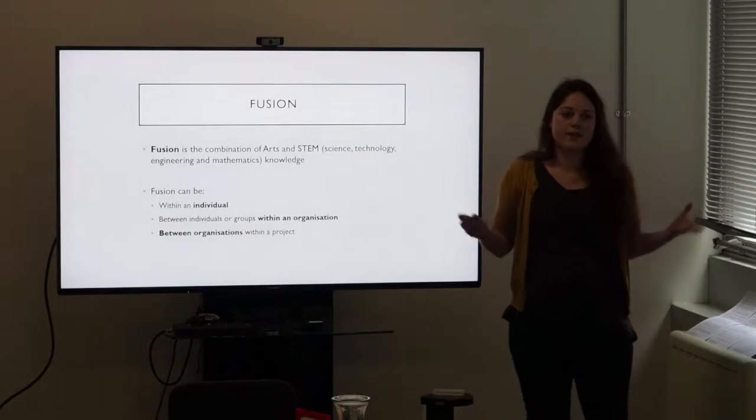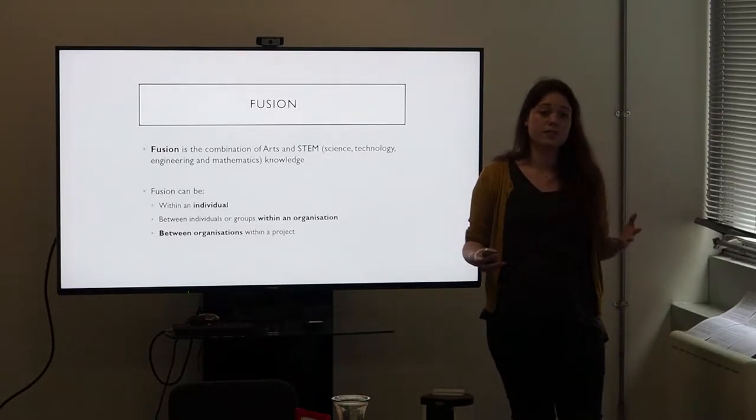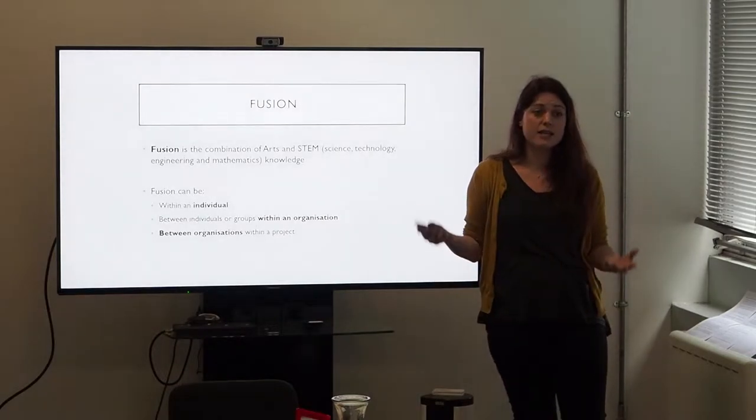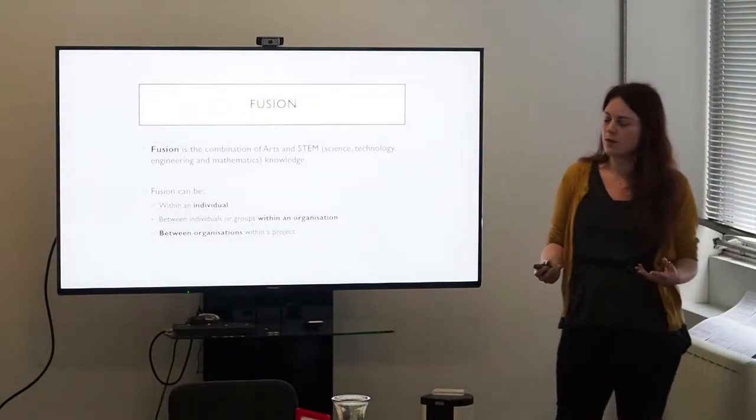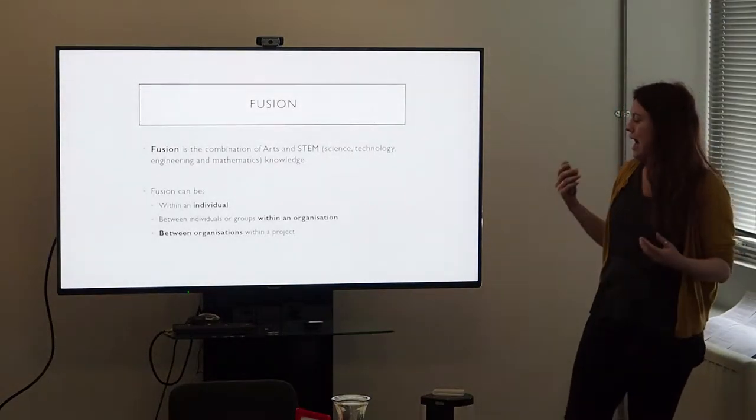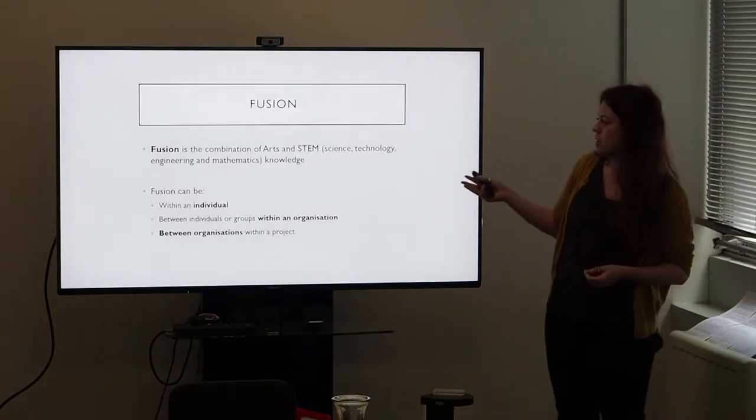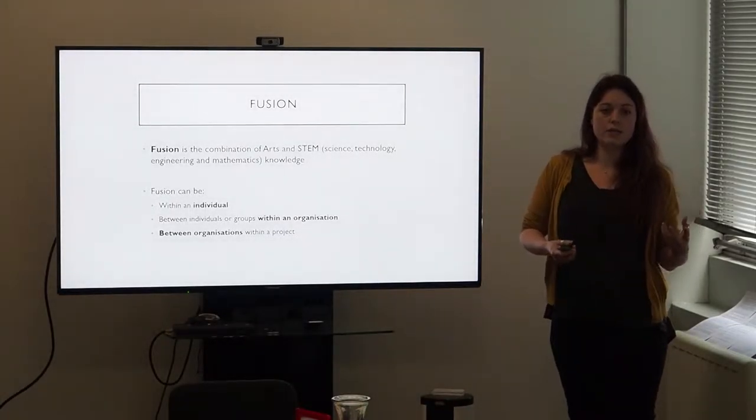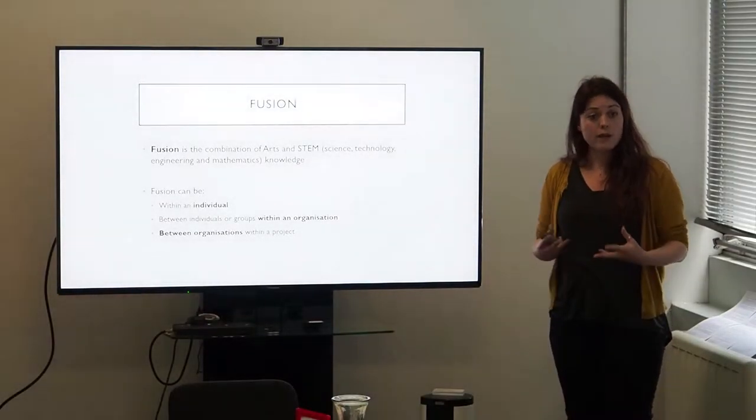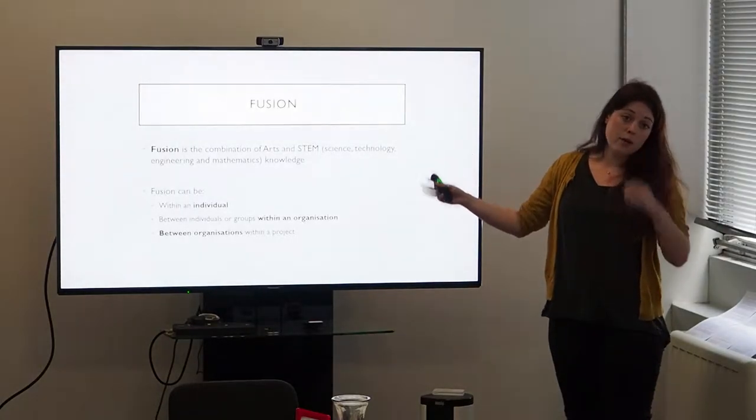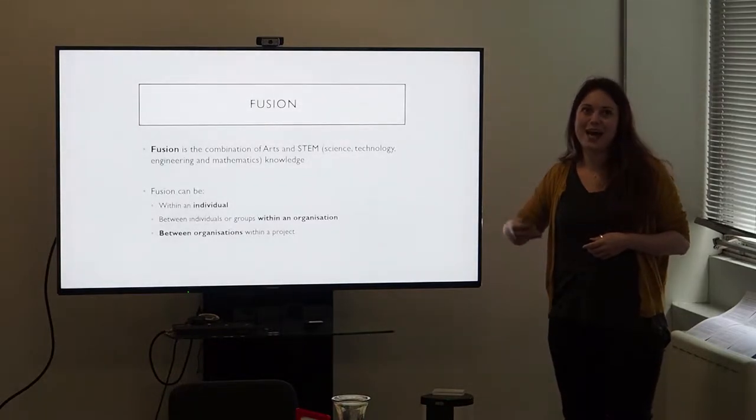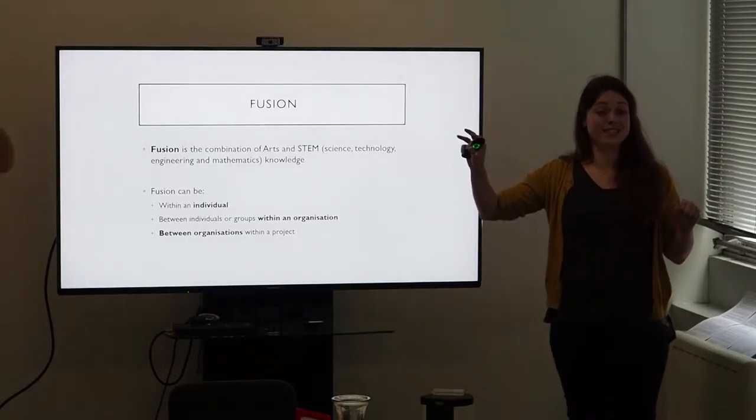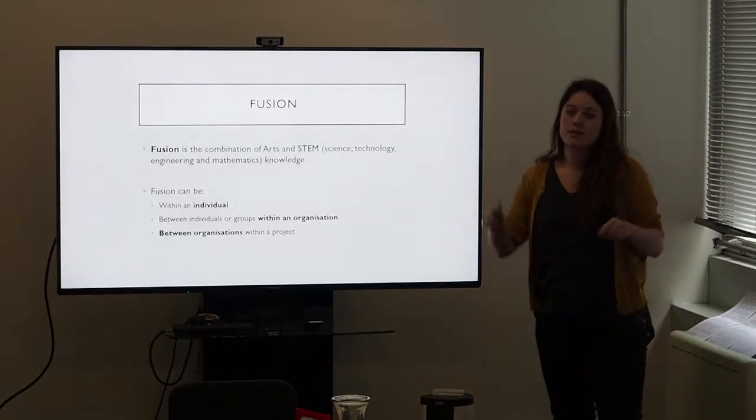So why are they growing so fast? What's going on? Well, there are lots of different reasons why the creative industries are taking off. One of the reasons that I think is key, and what I'm going to be talking about today, is this idea of fusion. So what do I mean by fusion? Fusion is the combination of arts and STEM knowledges. So STEM being science, technology, engineering, and mathematics. And some people when they talk about fusion, talk about the combination of science and creative skills. And that's one way of viewing fusion. I like to think of it in terms of arts and STEM, because I think that science and technology can be very, very creative itself. I think it's sort of a false dichotomy to say that the arts are creative and that science isn't. I think they both are. So I choose to look at it as the arts and STEM skills.